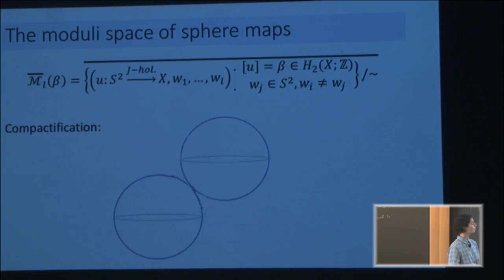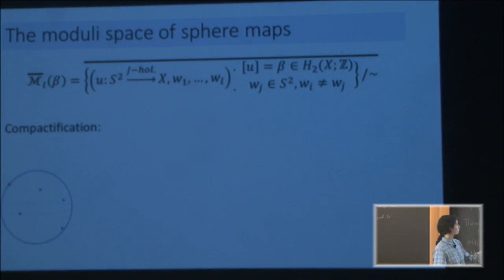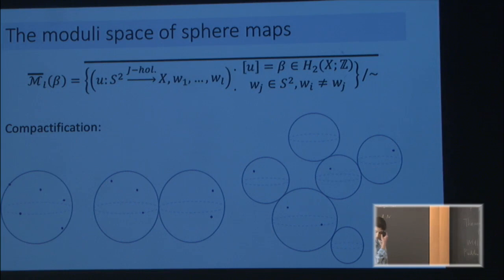A typical element in this moduli space may look like a sphere with a bunch of marked points — W1, W2, 3, 4, 5. It may have nodes: one node, or even a billion nodes, but always a finite number — that's just a fact of life.